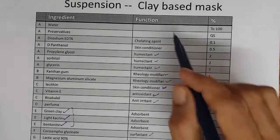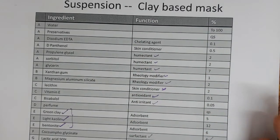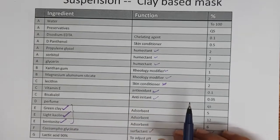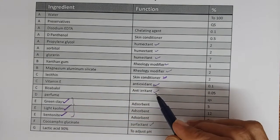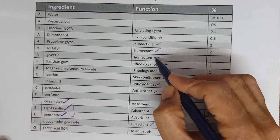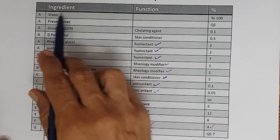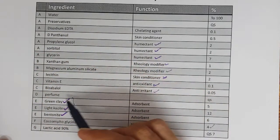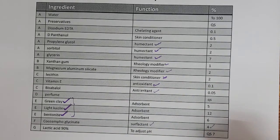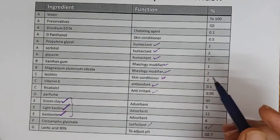This is a clay-based mask — it's a suspension. Basically the clays — green clay, light kaolin, and bentonite — are suspended in water and humectants: propylene glycol, sorbitol, glycerin, and water. We have magnesium aluminium silicate and xanthan gum as rheology modifiers. Then lecithin as a skin conditioner, vitamin E as an antioxidant, bisabolol as an anti-irritant.